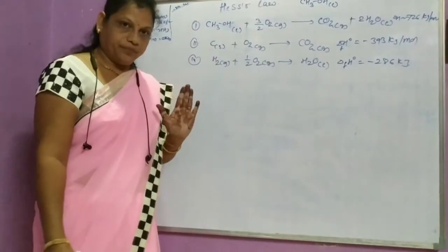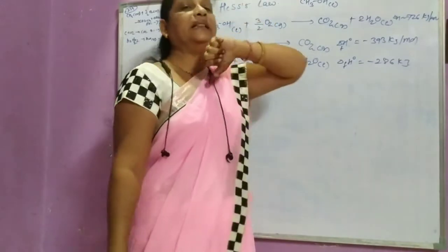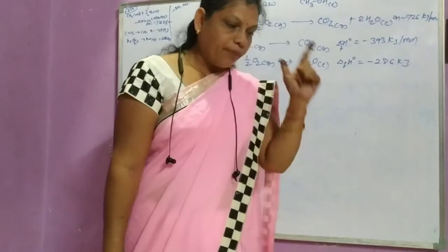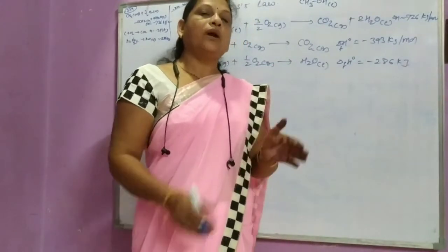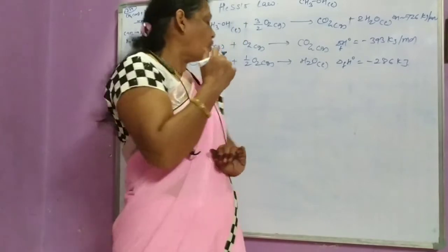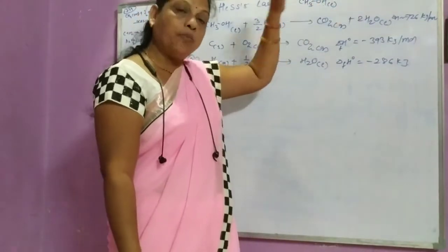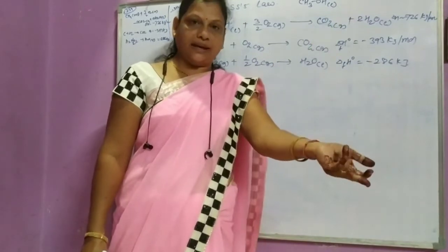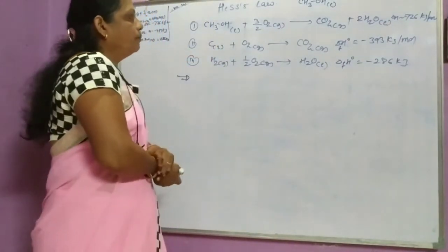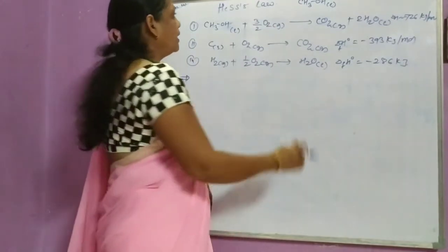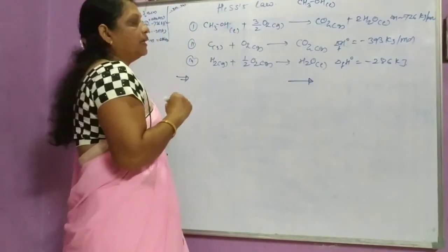We have to calculate the enthalpy of formation of methyl alcohol. Enthalpy of formation means the enthalpy change for the formation of any molecule. According to the definition, one mole of the given substance is formed from its elements in their standard state, and the change in enthalpy at a given temperature and pressure is called the heat of formation of that molecule. So from the definition, we write the equation for the formation of methyl alcohol.